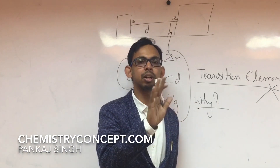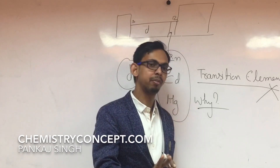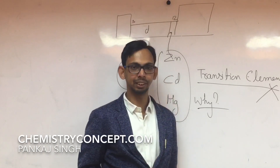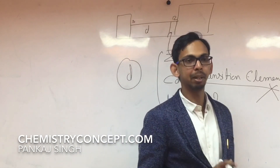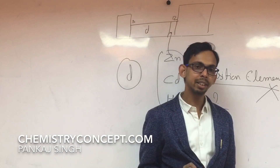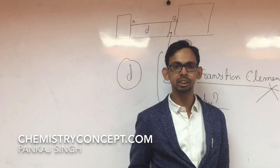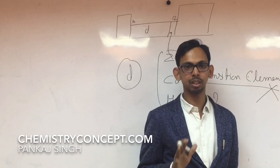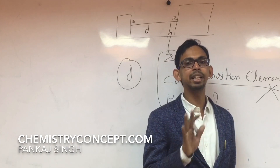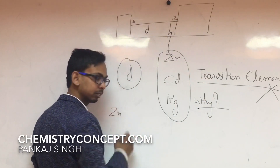Every D-block element is not necessarily a transition element. There is a specific criteria which an element must fulfill to become a transition element. According to the definition, that element or metal which has an incompletely filled D sub-shell either in its ground state or in its most common oxidation state is a transition element. So for being a transition element, a metal must have an incompletely filled D sub-shell — that means it must not be D10.